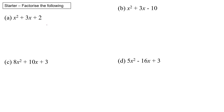Let's have a go at the first one: x squared plus 3x plus 2. To factorize it means we've got to put it back into brackets. There's no coefficient of x squared, so it's just x times x. We take the plus 2 and look for factors of 2 — which are 1 and 2 — and 1 plus 2 gives me 3 in the middle. So it's x plus 1 times x plus 2.